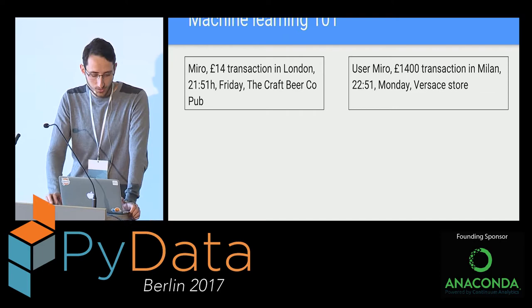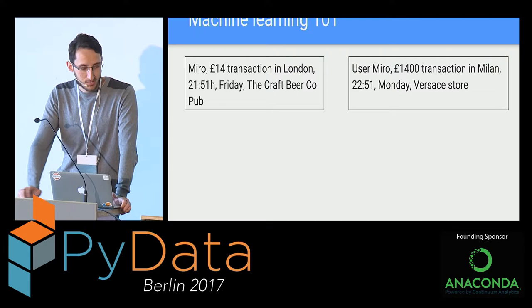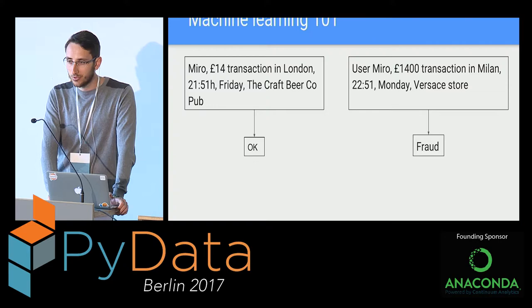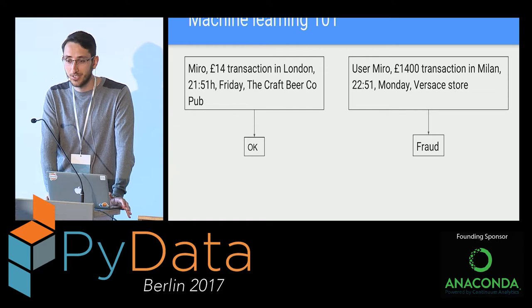For example, if you've got something like a user by the name of Miro — that's me — making a 14-pound transaction late at night on a Friday in a pub in London, that's probably okay. If you're a credit card company looking to remove fraudulent transactions, this one is about as good as they come. That's what I do on Fridays.